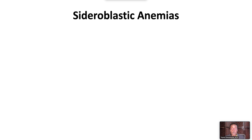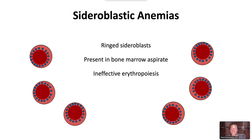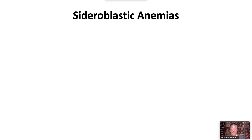Sideroblastic anemias are a group of disorders characterized by ring sideroblasts present in bone marrow aspirate. They are characterized by ineffective erythropoiesis, which leads to increased intestinal iron absorption and consequent systemic iron overload. Sideroblastic anemias may be congenital or acquired.